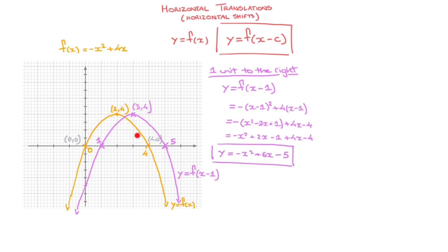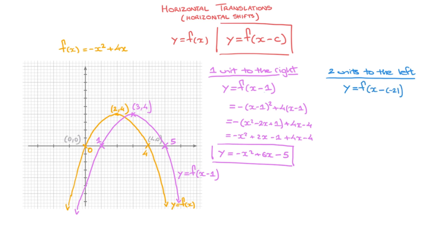Let's look at another example. Say I wanted to shift y equals f of x two units to the left. Because we're moving in the negative horizontal direction, we replace c by negative two — so we're moving this curve two units to the left. I replace c by negative two, meaning we define the new curve as y equals f of x minus negative two. Since we're subtracting something negative, we can write this as y equals f of x plus two.